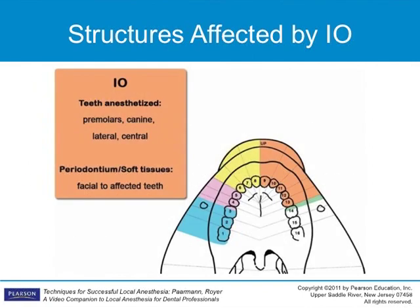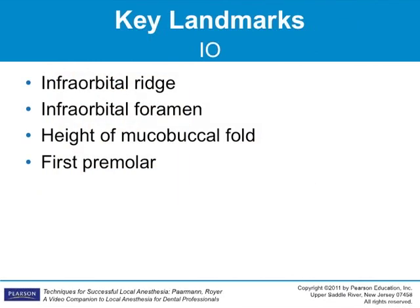In some individuals, the mesial buccal root of the maxillary first molar is also anesthetized. The landmarks to palpate for this injection are the infraorbital notch and bone immediately inferior to the notch. The infraorbital foramen is in the concavity directly inferior to the notch and is the landmark for this injection.